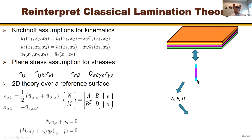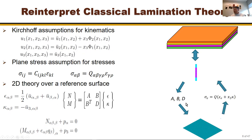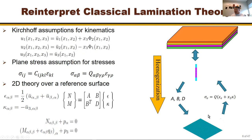You integrate through the thickness to get the ABD matrix, then perform plate element analysis. After solving the plate problem, you get in-plane strains, curvatures, forces, and moments, then calculate stress within each layer and apply your failure criterion. From the 3D model you reduce to a surface model — that's homogenization — and then use in-plane strains and curvatures to recover the 3D stress field — that's de-homogenization.